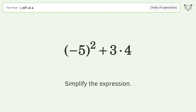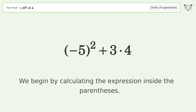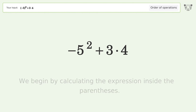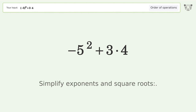Simplify the expression. We begin by calculating the expression inside the parentheses. Simplify exponents and square roots: negative 5 squared equals 25.